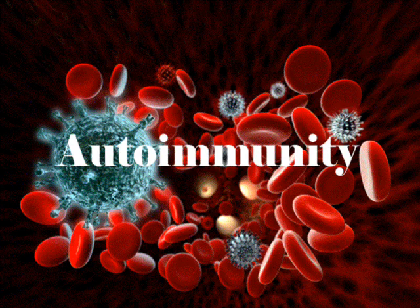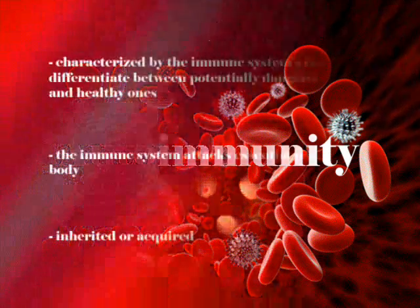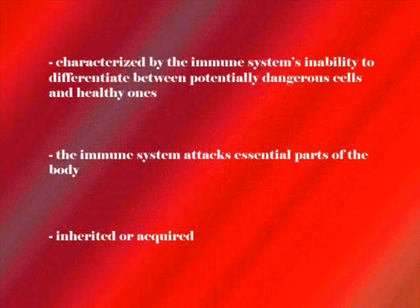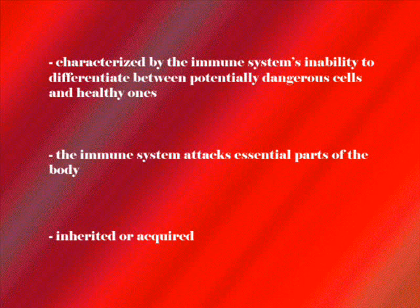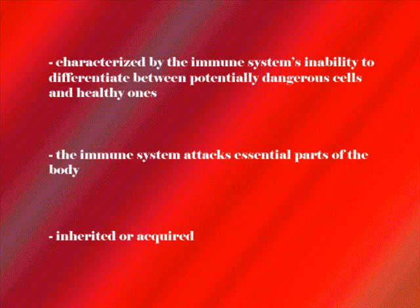The first type of immune system disorder that we will discuss is autoimmunity. Autoimmune disorders are characterized by the immune system's inability to differentiate between potentially dangerous cells and healthy ones. Thus, the immune system attacks essential parts of the body as if they are dangerous.